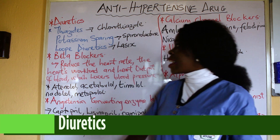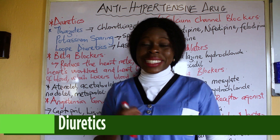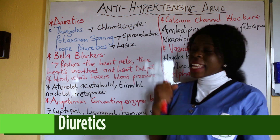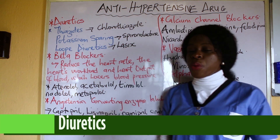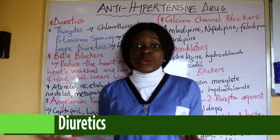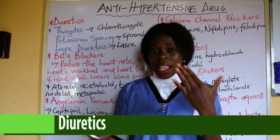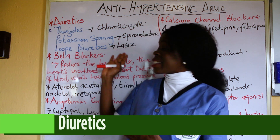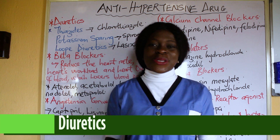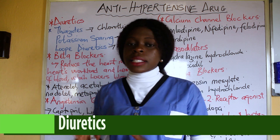An example of the thiazides is chlorothiazide. An example of potassium-sparing diuretics is spironolactone. An example of loop diuretics is Lasix, which is popularly known as furosemide. Take note — furosemide is also known as Lasix.